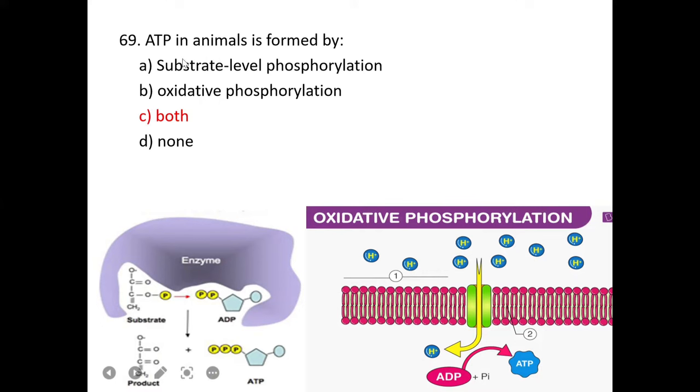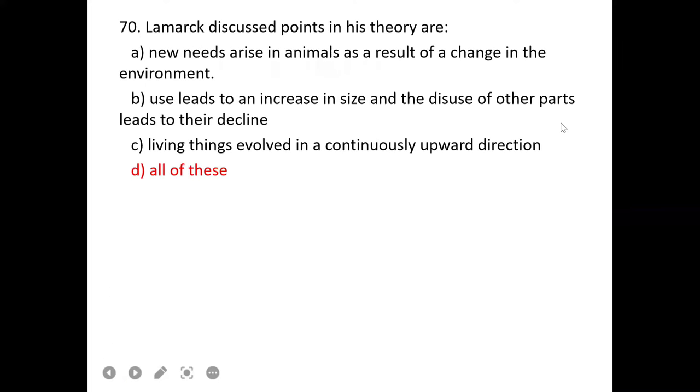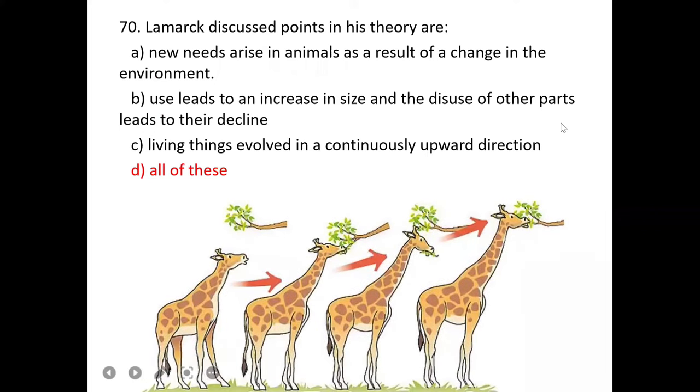Lamarck discussed several points in his theory: new needs arise in animals as a result of a change in the environment, that's true. Use leads to an increase in size and disuse of other parts leads to their decline, yes it's true. Living things evolved in a continuously upward direction, yes it is also true. So D is correct.